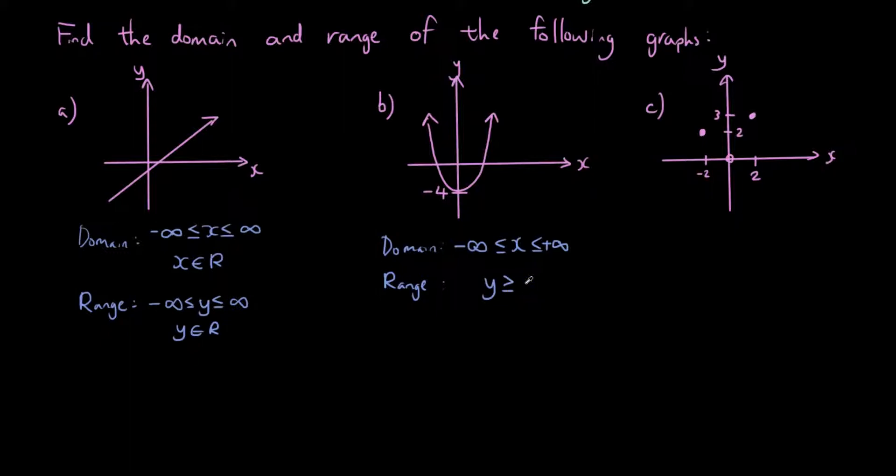And then the range is going to be y is bigger than or equal to negative 4. Because if you have a look at this parabola, the bottom of it touches y is negative 4. So the parabola vertically will cover all the values above y is negative 4. So that is the range.